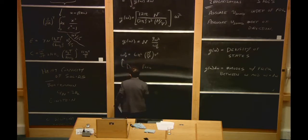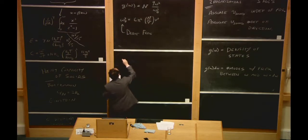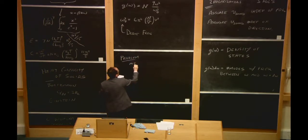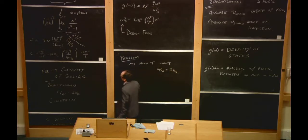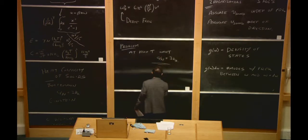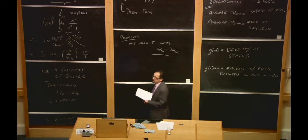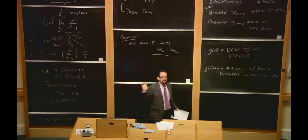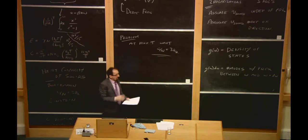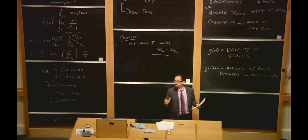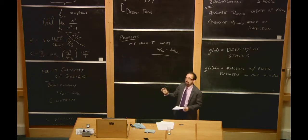Unfortunately, we still have a problem at high T: we want the law of Dulong-Petit, C/N = 3k_B, and we didn't get that — we got T³ at all temperatures. This is where Debye had to scratch his head. For electromagnetic radiation it really is T⁴ energy all the way to arbitrarily high temperature, but for a solid, we know the high-temperature heat capacity should be just 3k_B, not T³.